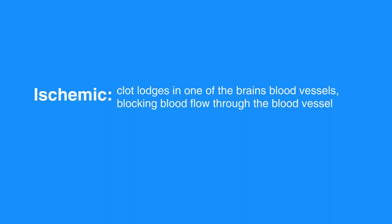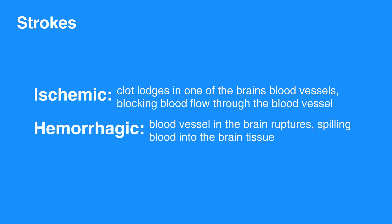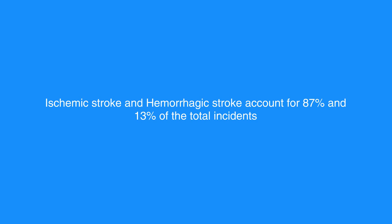In ischemic stroke, a clot lodges in one of the brain's blood vessels, blocking blood flow through the blood vessel. In hemorrhagic stroke, a blood vessel in the brain ruptures, spilling blood into the brain tissue. Ischemic stroke and hemorrhagic stroke account for 87% and 13% of total incidents, respectively.